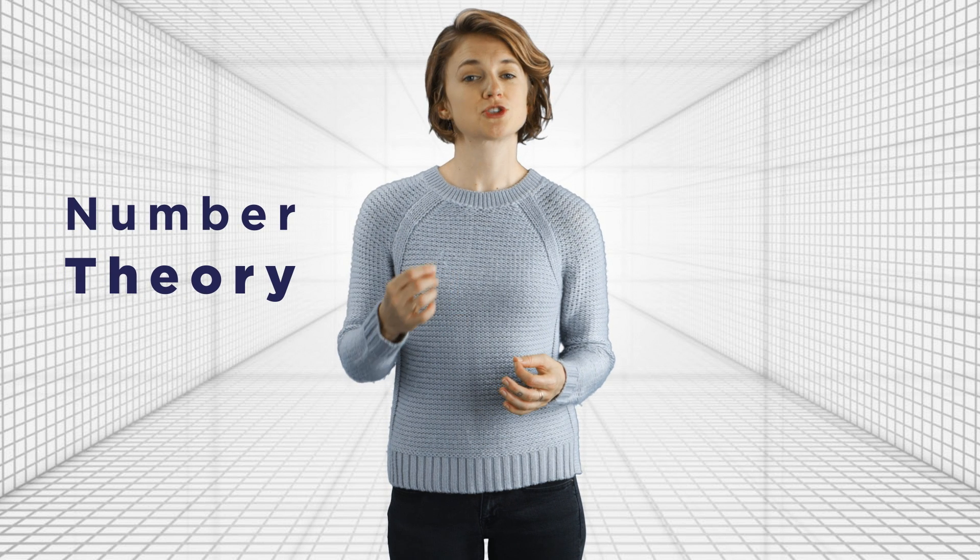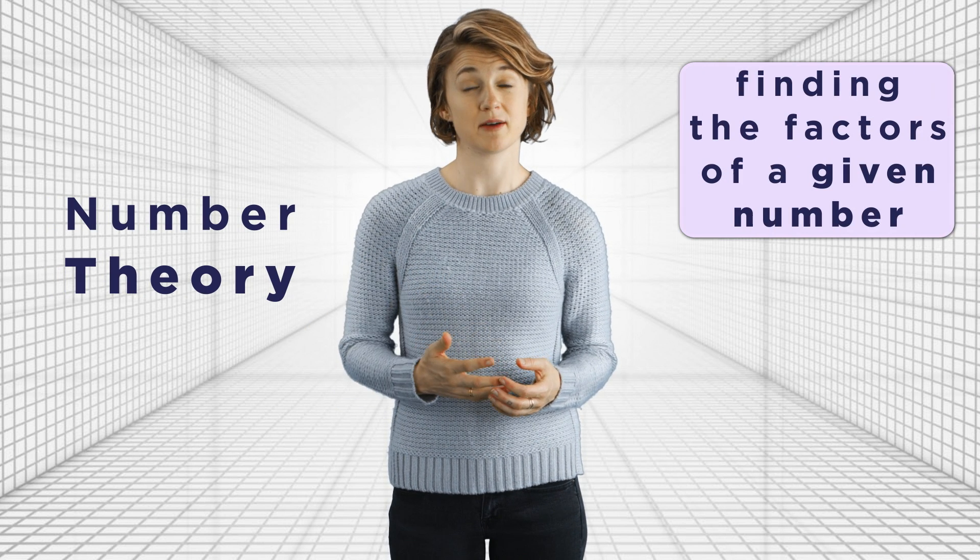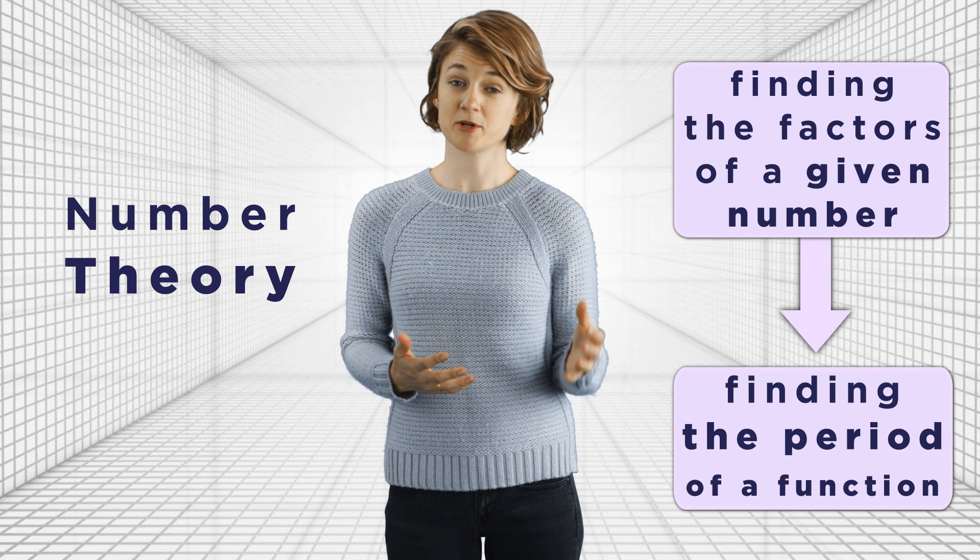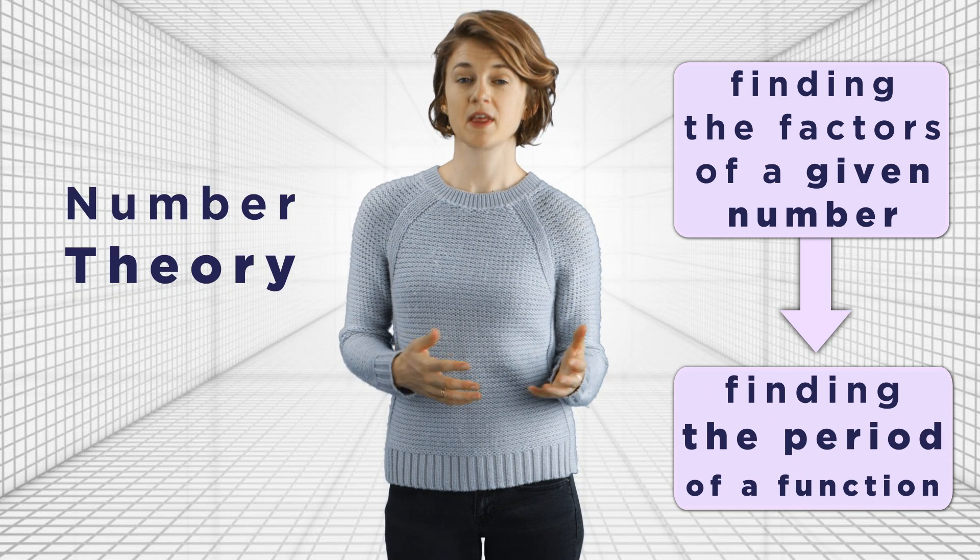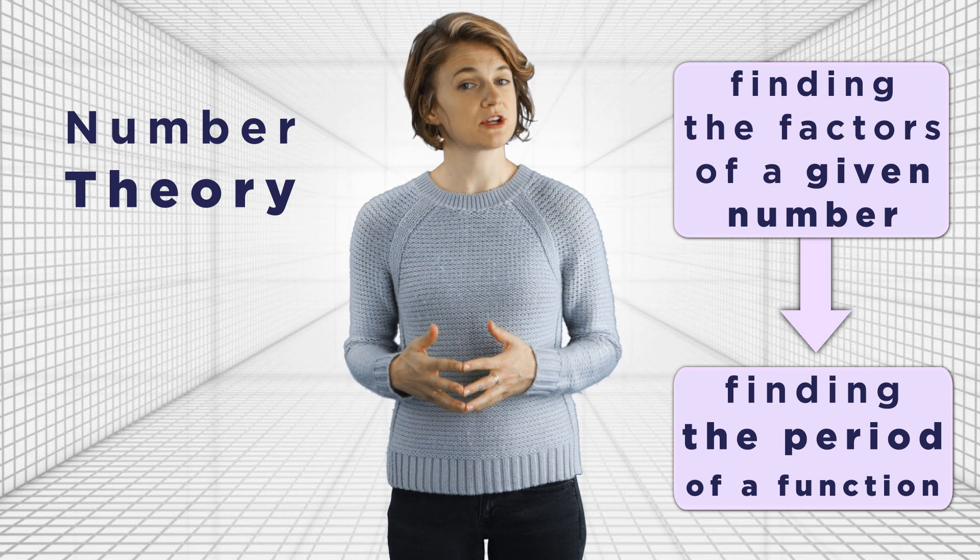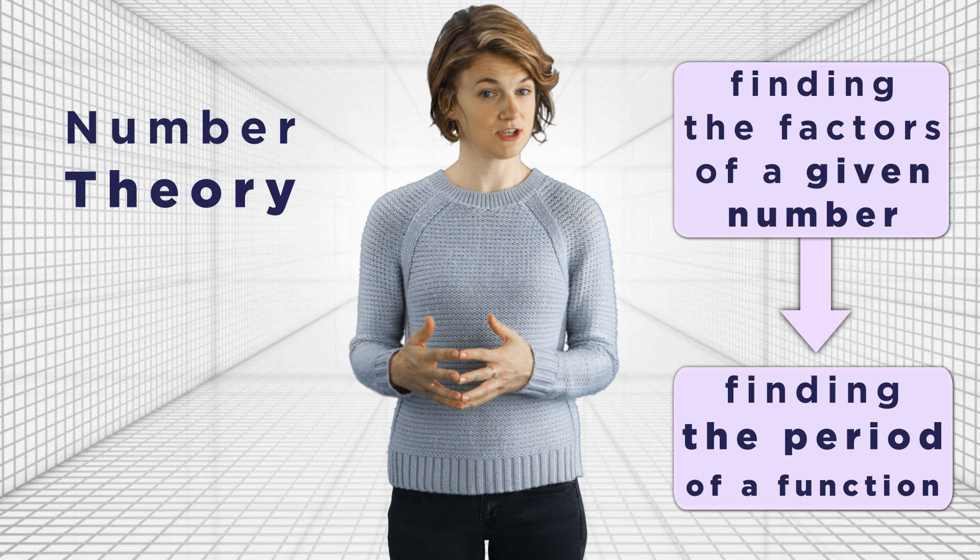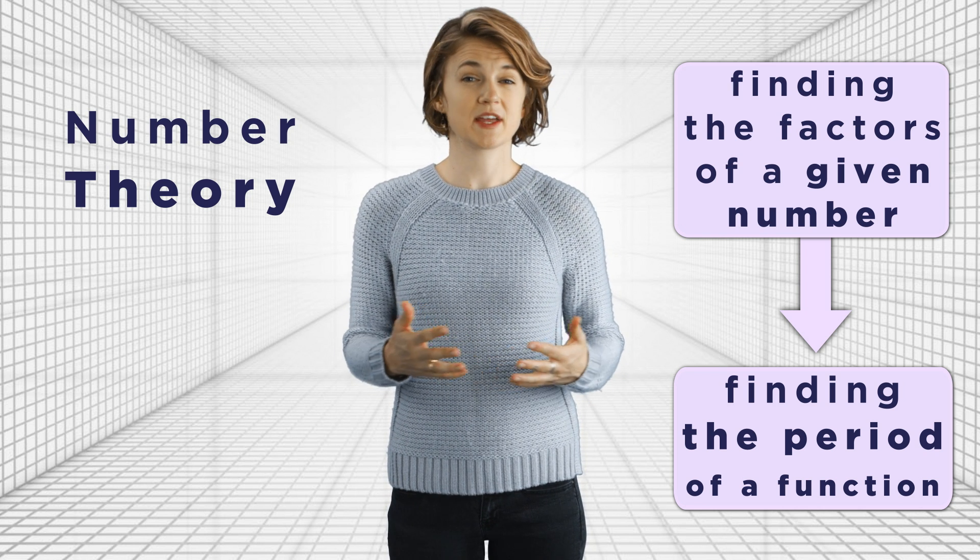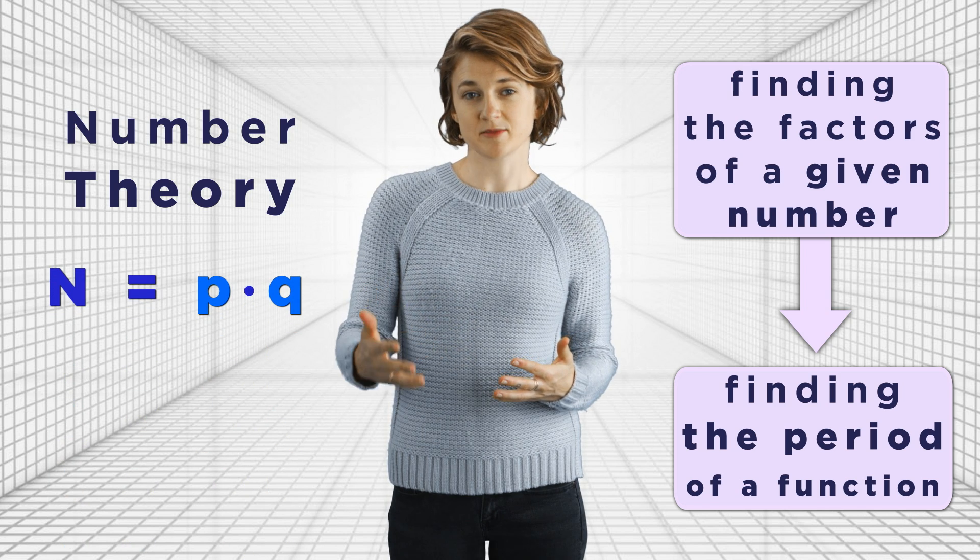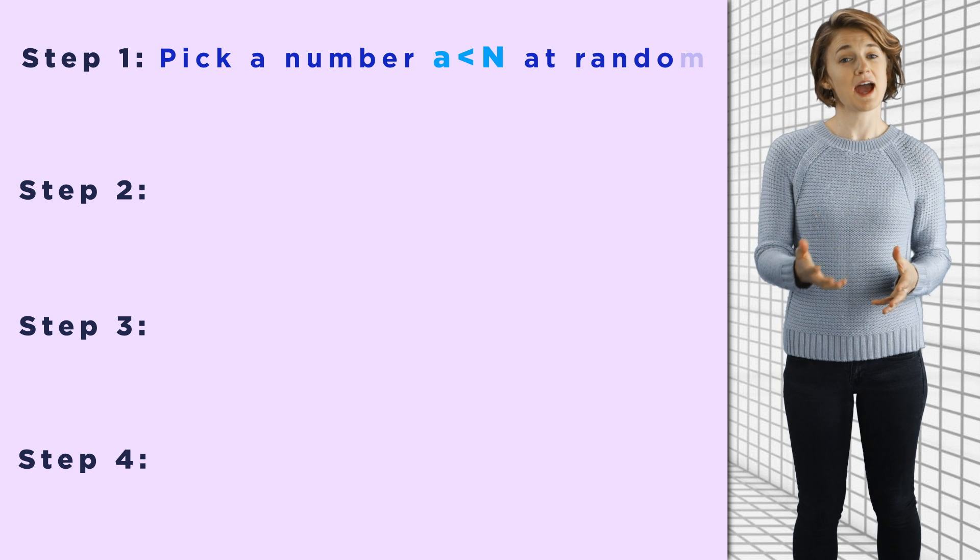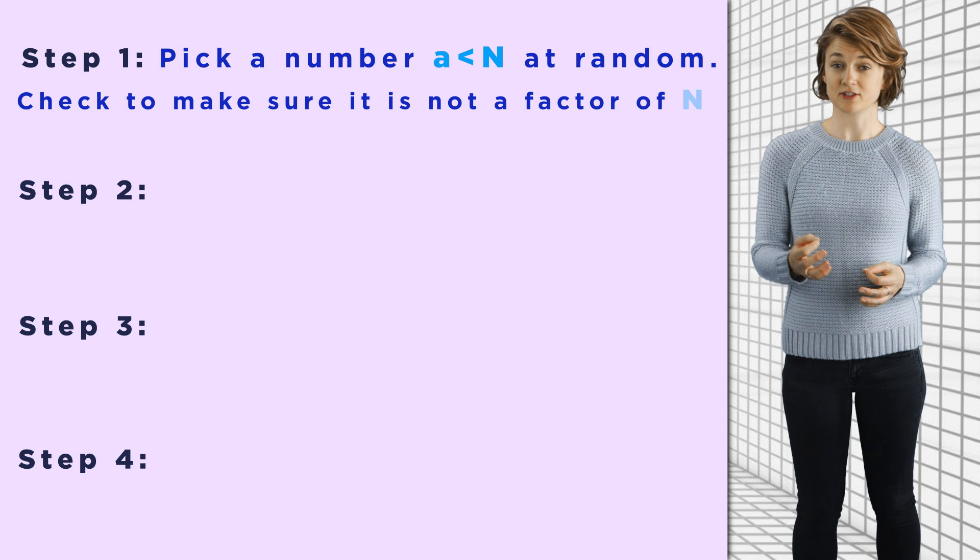To do that, Shor's algorithm actually uses some number theory to transform the problem of finding the factors of a given number into a problem of finding a different number, the period of a particular periodic function. In last week's episode, we outlined the number theory in Shor's algorithm for finding the two secret prime factors, p and q, of a given number n. That is, n is equal to p times q. Here's the four basic steps. Step one, pick a number a less than n at random. Check to make sure it's not a factor of n.